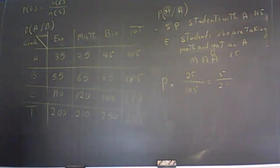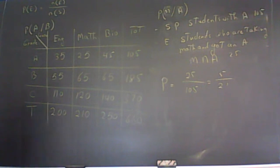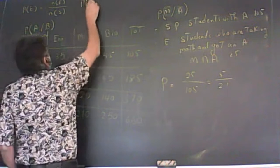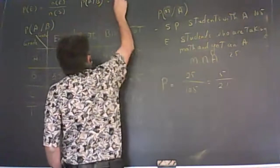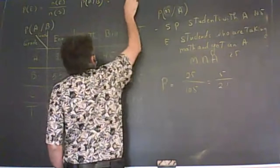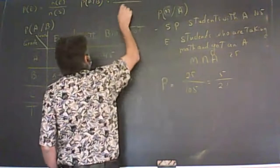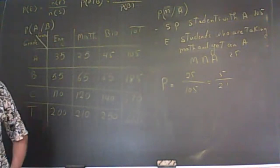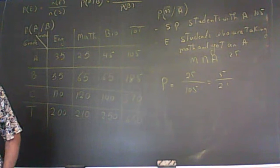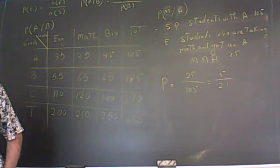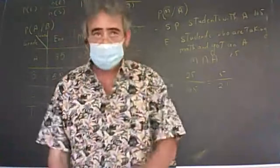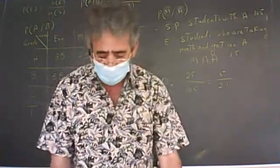So this is always the formula for conditional probability: probability of A given B equals probability of A intersection B divided by probability of B. Let's do some examples from the book now that we have an idea of what conditional probability is.